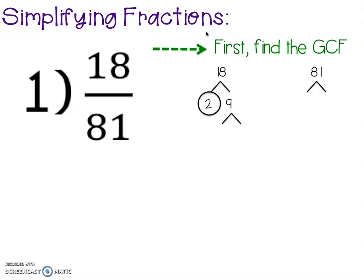9 is not prime, so I'm going to break it down further. I can multiply 3 times 3 to give me 9, and they're both prime, so I'm going to put circles around them. Now I'm going to write my prime factorization for 18. The prime factorization for 18 is 2 times 3 times 3. Remember, least to greatest.